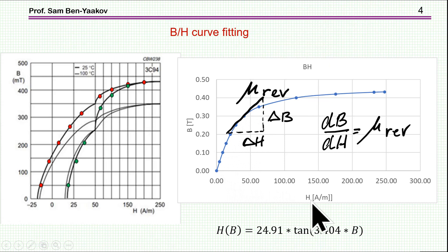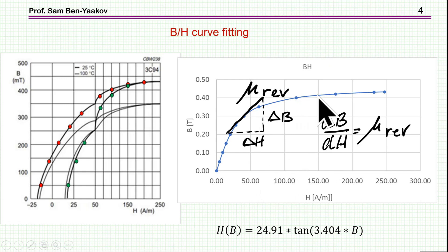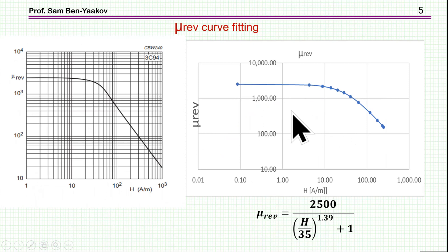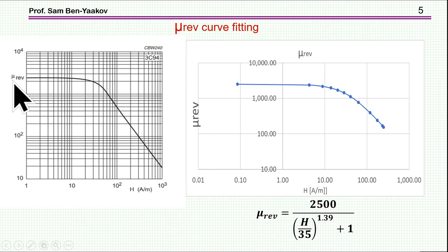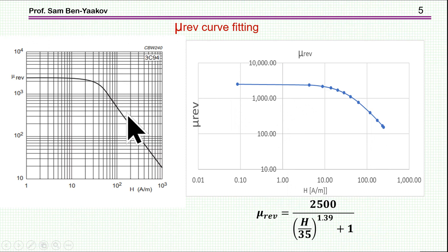As we go up with the H magnetic field, the slope is changing, and this is the reason why the inductor will change its inductance as we bias it with the DC current. Another piece of information that vendors typically provide is this reversible small-signal relative magnetic permeability. Here is the data and here is the fitting, which comes to an expression that provides a pretty good fit in the region we are interested in.